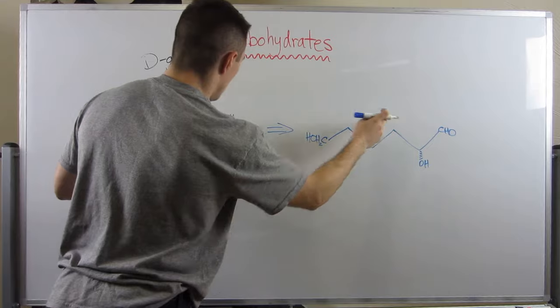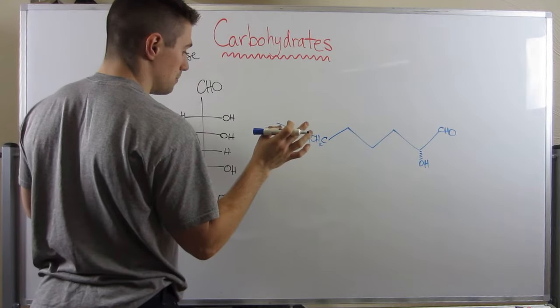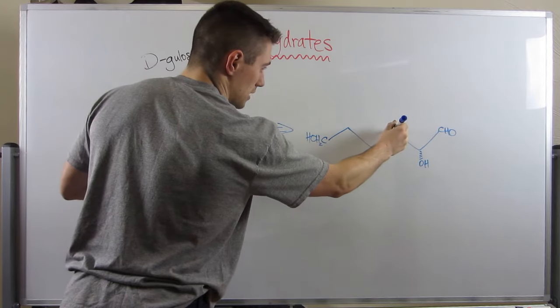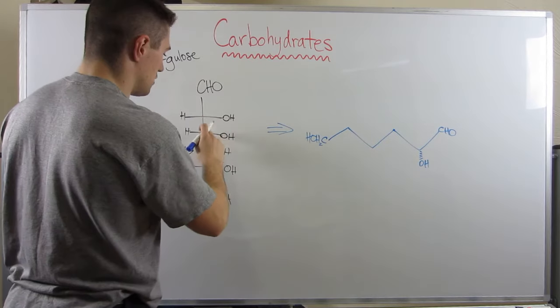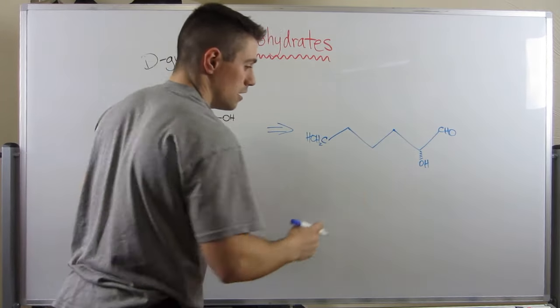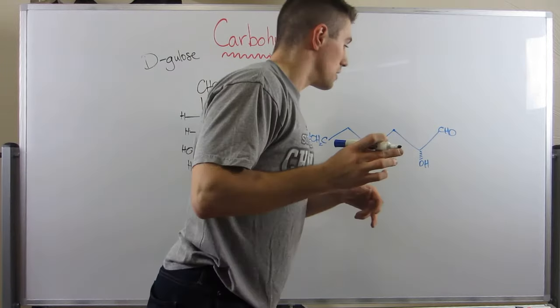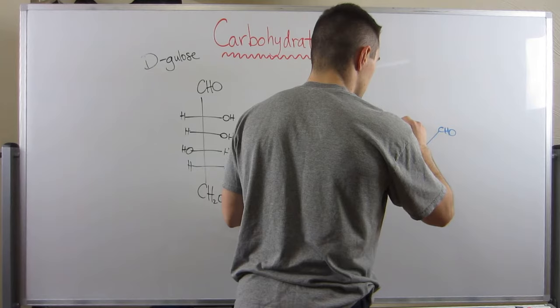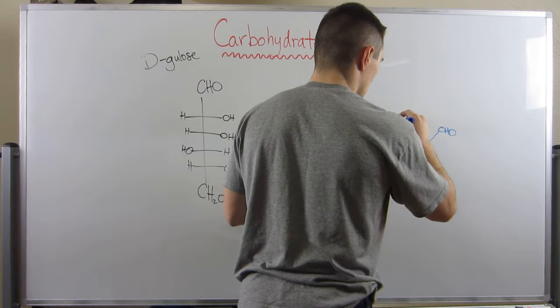Still looking at the next carbon, OH is on my right-hand side. Remember, since my carbon's right here, I need these two to be going away from me. So I'm going to step up like this. My right hand's coming out of the board. OH is a wedge.